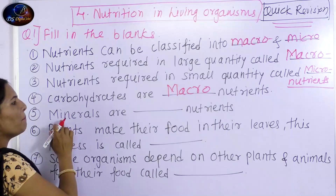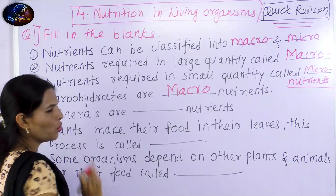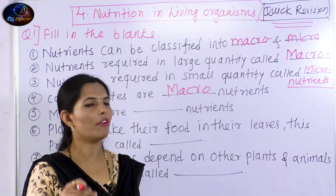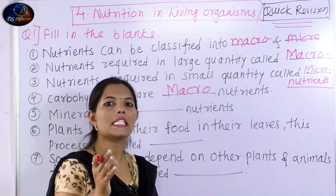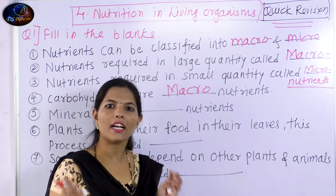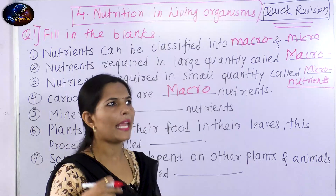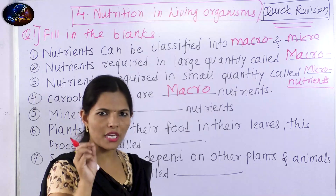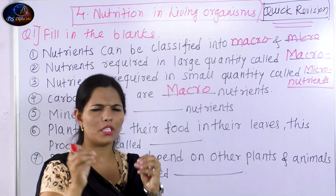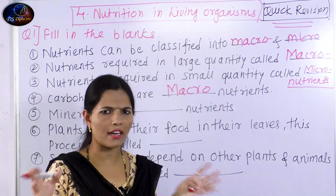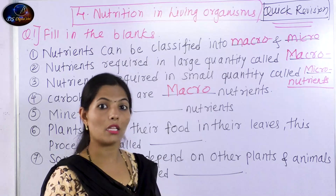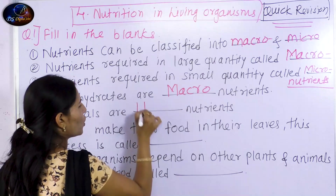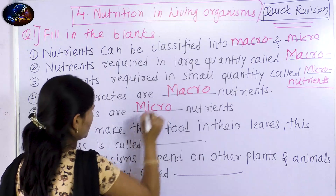The next question: minerals are micronutrients. Minerals, salts, and vitamins — vitamin A, B, C, D, E, K — all these vitamins are required in low amounts. Salt, calcium, etc. are also needed in low amounts in our body. So minerals and vitamins are micronutrients.